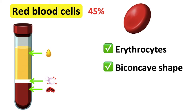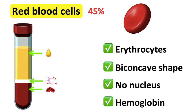Red blood cells are small biconcave discs with no nucleus, and they have the protein hemoglobin. This equips them for their main function of carrying oxygen to cells around the body. The biconcave shape ensures a large surface area to absorb oxygen, which is then supplied to cells. The absence of a nucleus also ensures that there is more space for the absorption of oxygen.